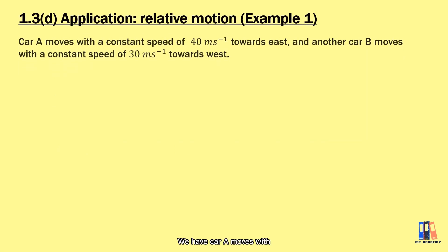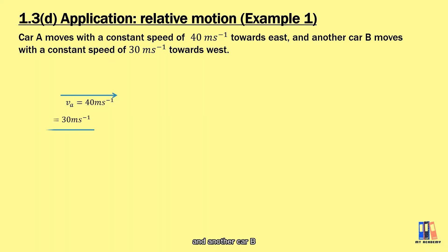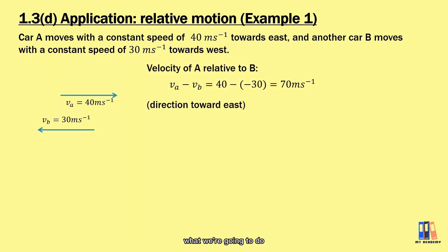Let's see one example. Car A moves with a constant speed of 40 meters per second toward east, and another car B moves with a constant speed of 30 meters per second toward west. To calculate the velocity of A relative to B, we get the velocity of A minus velocity of B.